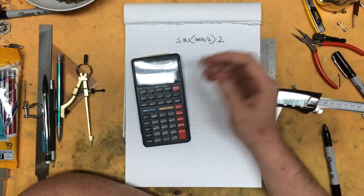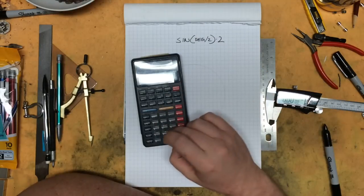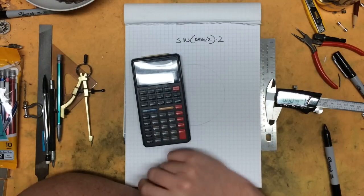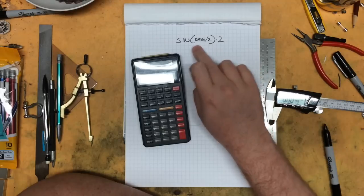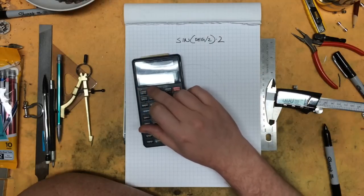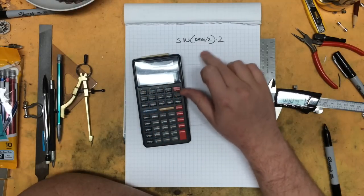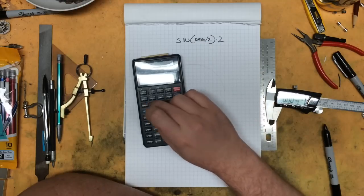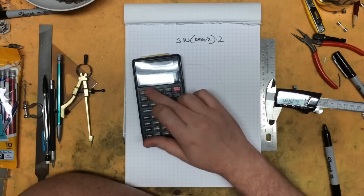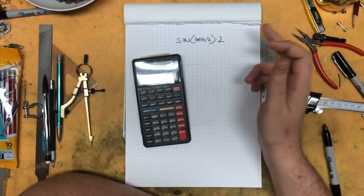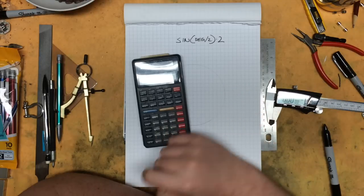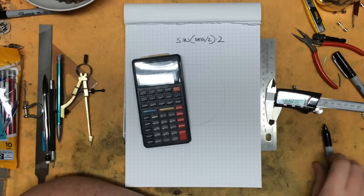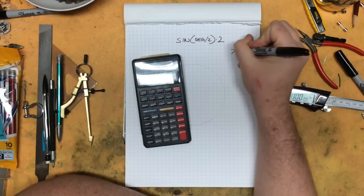First we need to find our degrees: 360 divided by seven. Now we get into our formula. 51.428, that's our degrees, divided by two. That takes care of that. Sine: 0.43388, etc.